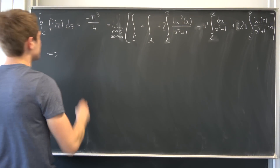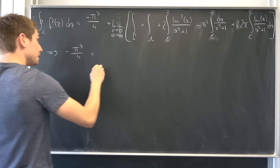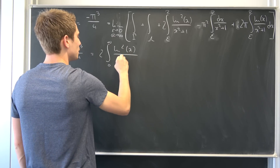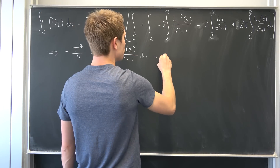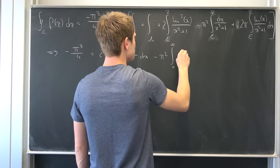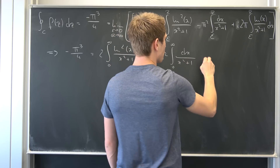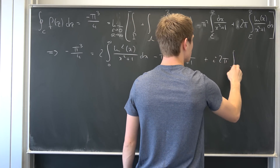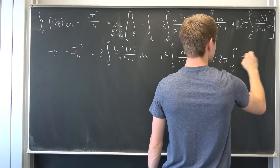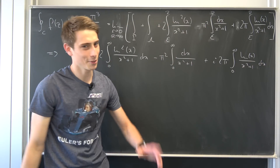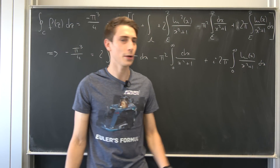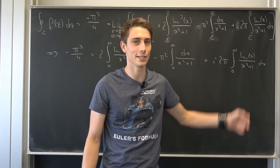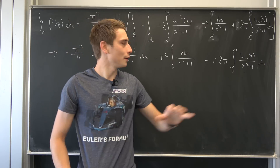So our contour integral of f(z) dz equals −π³/4, and this equals: 2 times the integral from 0 to infinity of natural log squared of x over (x² + 1) dx, minus π²/2 times the integral from 0 to infinity of 1/(x² + 1) dx, plus i·2π times the integral from 0 to infinity of ln(x)/(x² + 1) dx. You might notice something really cool — I did a video called an Euler experience on this last integral.